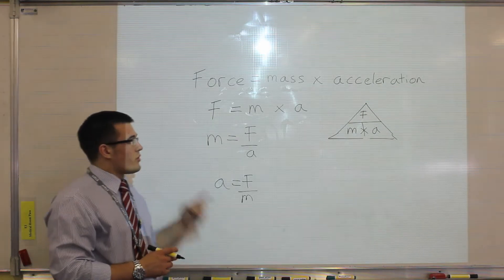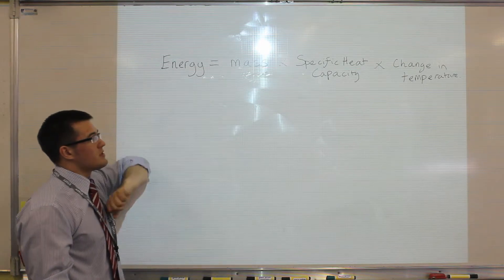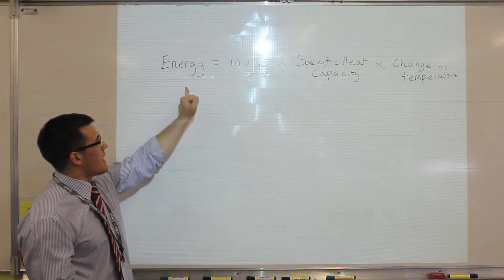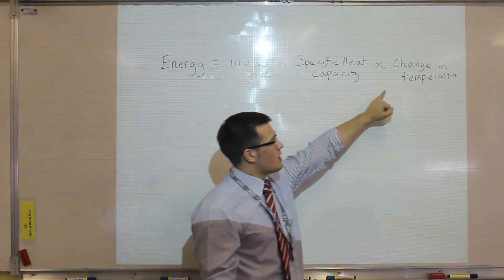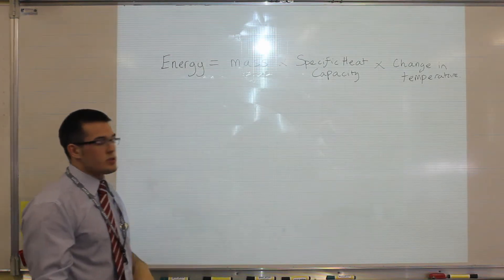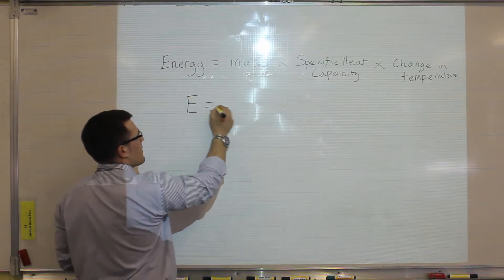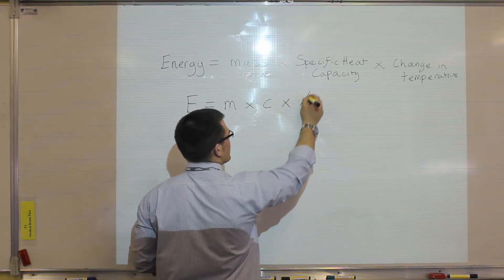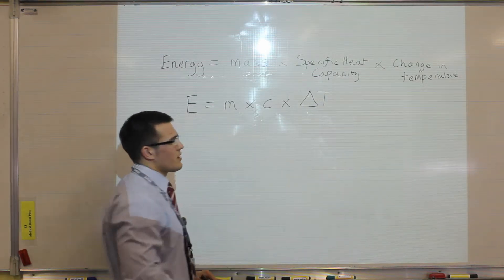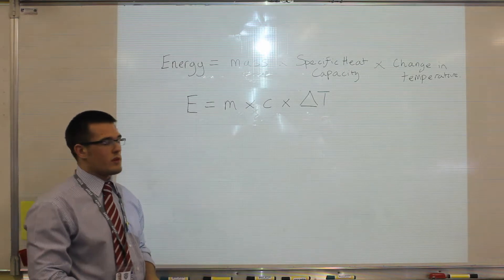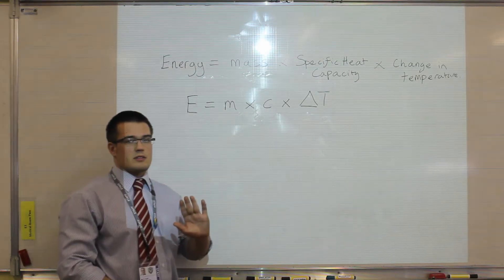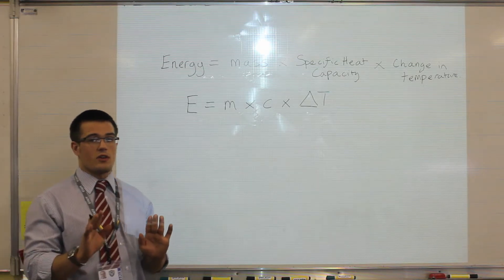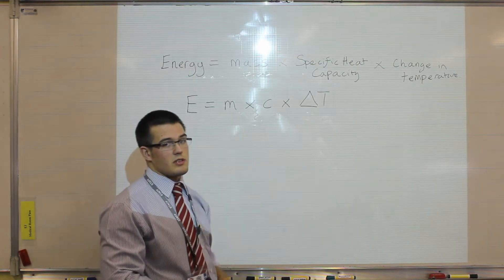Now let's look at an equation with more than three quantities. This equation for energy transfer to a material by heating is the equation for specific heat capacity, and it has four quantities. Energy equals mass multiplied by specific heat capacity multiplied by the change in temperature. In symbols: energy is capital E, mass is m, specific heat capacity is lowercase c, multiplied by delta T — the change in temperature. The triangle symbol delta represents 'change in', so use the difference in temperature, not the absolute value.